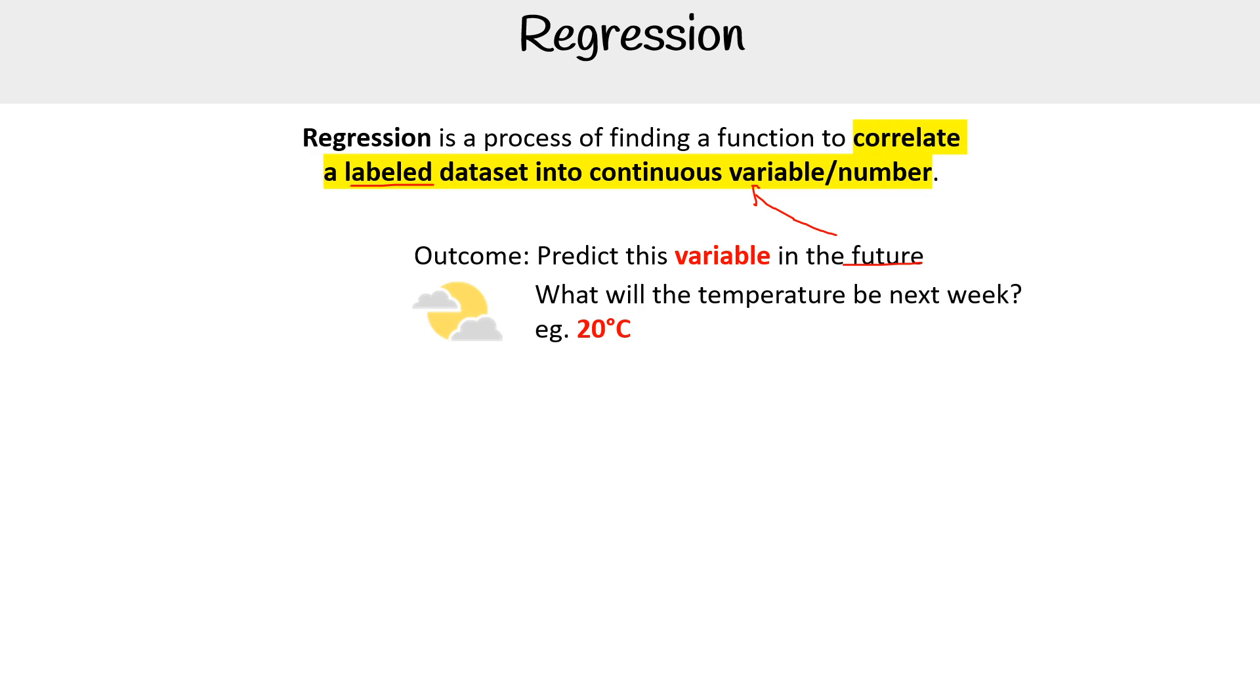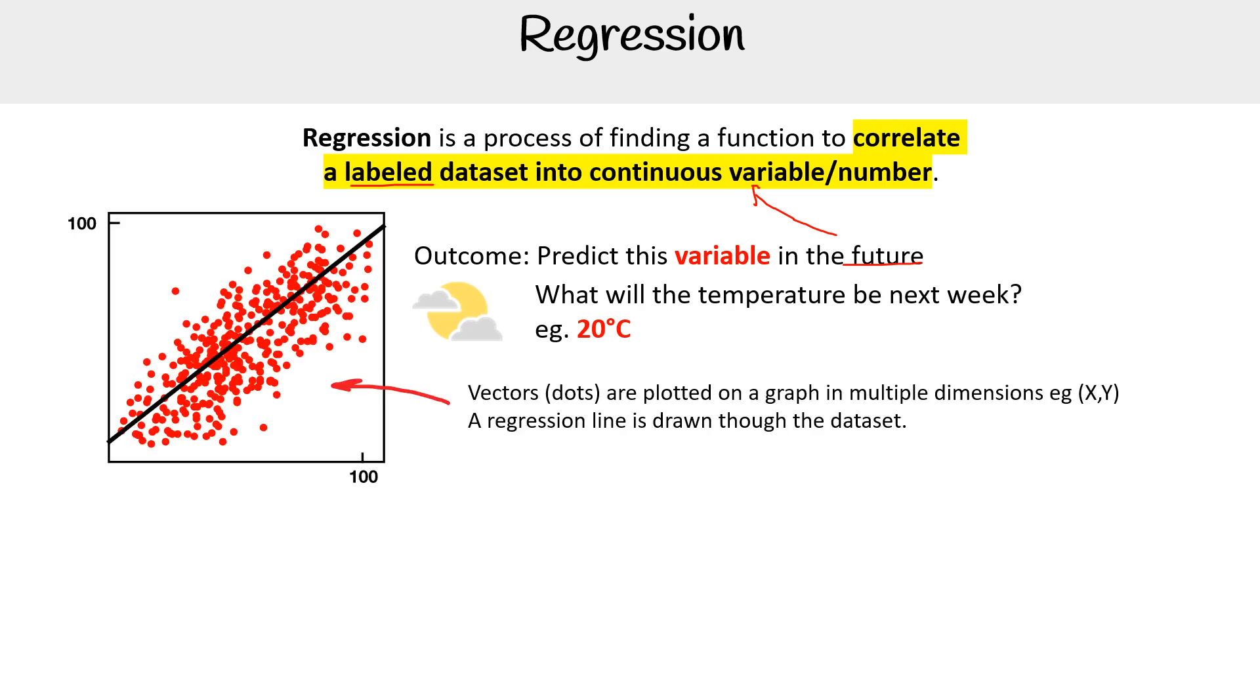What will the temperature be next week? Say 20 degrees Celsius. How would we determine that? We would have vectors, or dots, plotted on a graph that has multiple dimensions. The dimensions could be greater than just X and Y—you could have many.